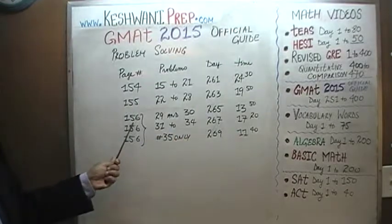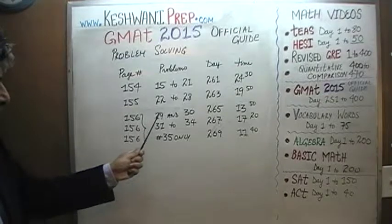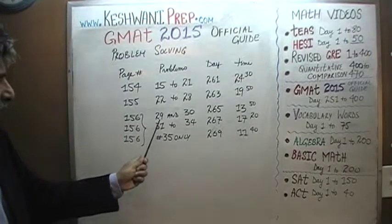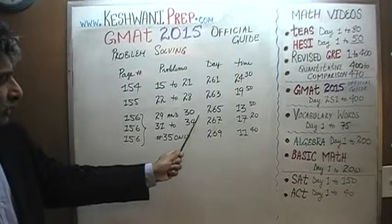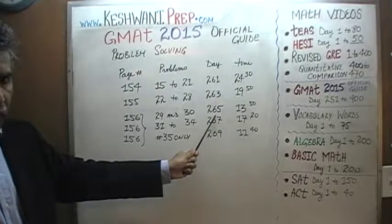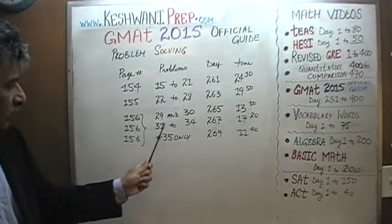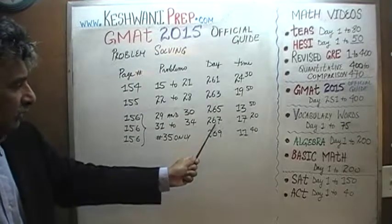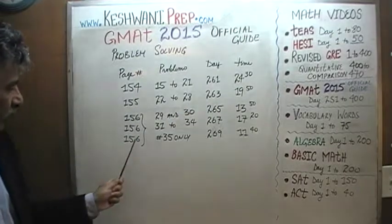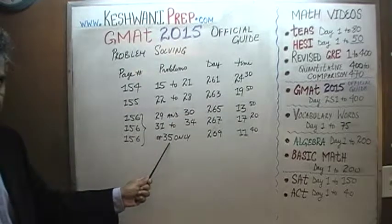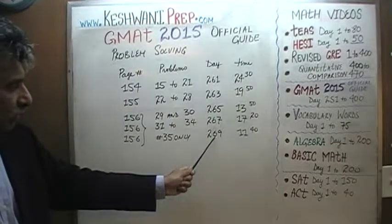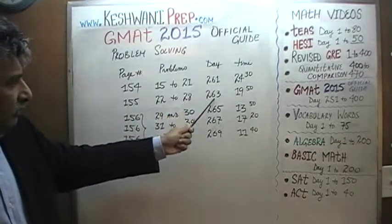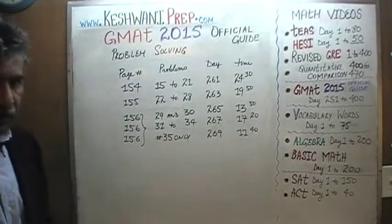On page number 156, the problems you find were done on three different days. Problem number 29 and 30 were done on day number 265. Problem 31 through 34 were done on day number 267. And finally, problem number 35 was done on day number 269. So that's days 261, 263, 265, 267, 269.